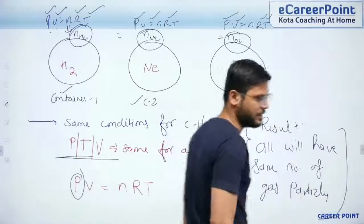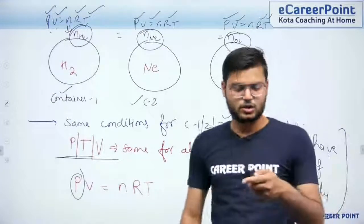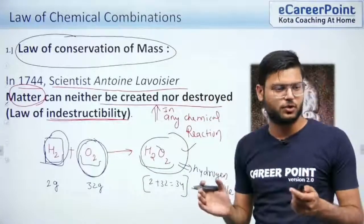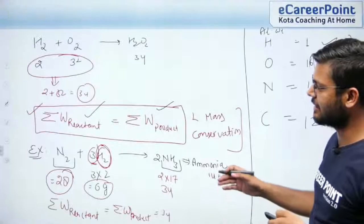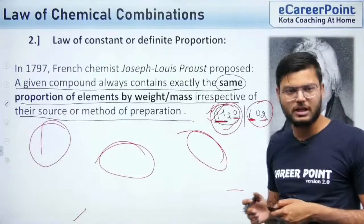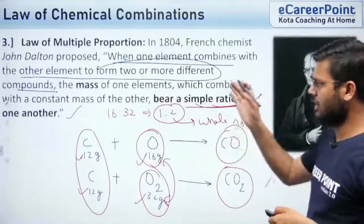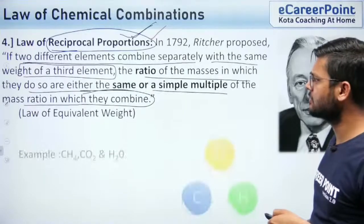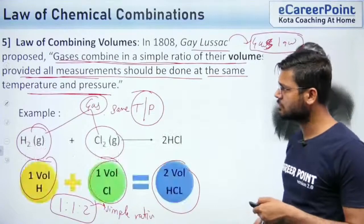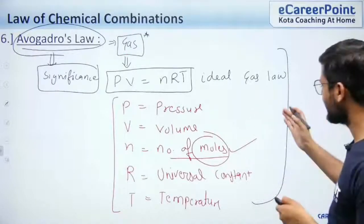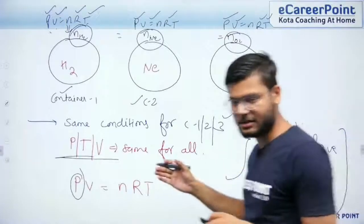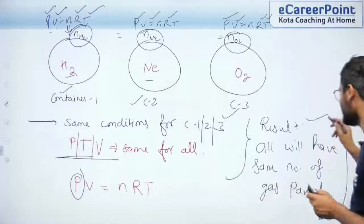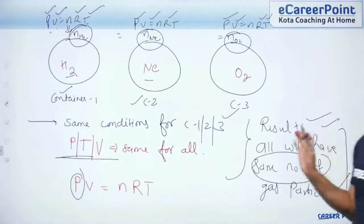So in this initial stage, what have we studied? We studied the law of conservation of mass, then we saw how it applies in reactions. Then we saw the law of constant definite proportion, then the law of multiple proportion, then the law of combining volumes, and then Avogadro's law. The interesting result of Avogadro's law is that three containers with different gases at the same conditions all have the same number of gas particles.